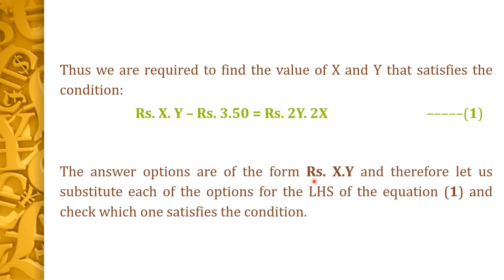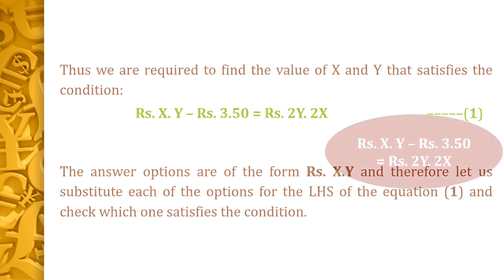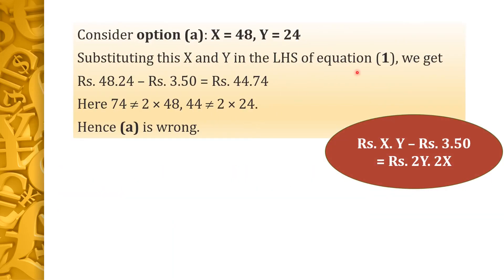The answer options are of the form rupees x and y paisae. Let us substitute each option in the LHS of equation 1. Considering option A, 48 rupees and 24 paisae, where x equals 48 and y equals 24: 48 rupees and 24 paisae minus 3 rupees and 50 paisae equals 44 rupees and 74 paisae. Here, 74 is not equal to 2 into 48, and 44 is not equal to 2 into 24. Hence option A is wrong.